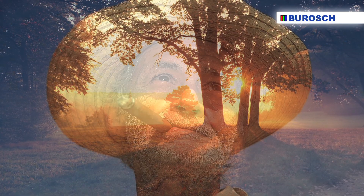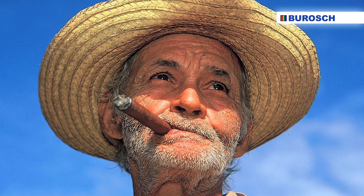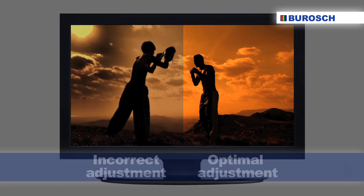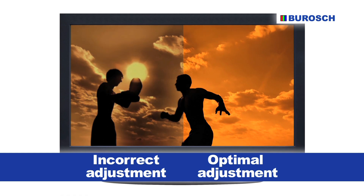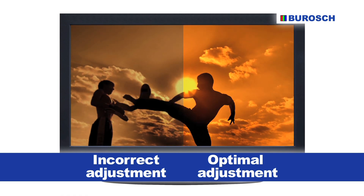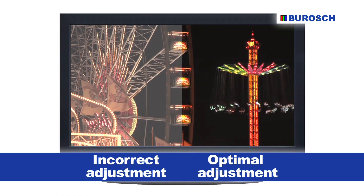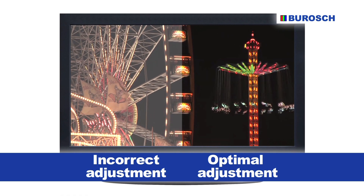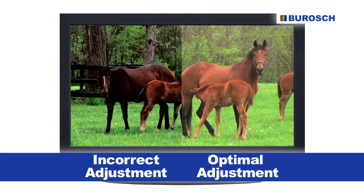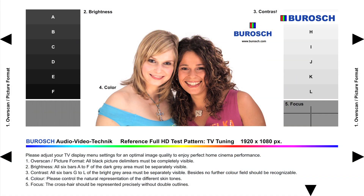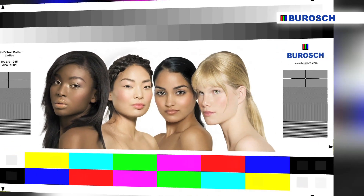Are you completely satisfied with the image quality of your flat screen television or your projector? Would you like to watch the original version of the film — that is, the director's cut with natural colors and optimal sharpness? Then check the image quality of your picture display device with our reference test sequence: professional, objective, simple and quick.